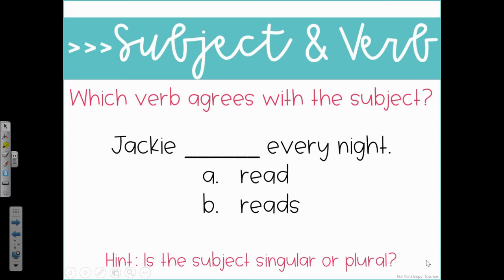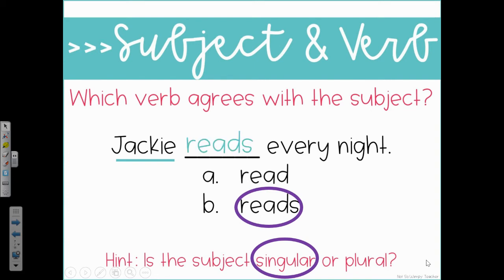Let's look at some examples. Which verb agrees with the subject? First, we need to see what our subject is. We have Jackie blank every night. Who is our sentence about? Our subject is Jackie. Is the subject singular or plural? Hopefully, you realize that our subject here is singular. So the general rule is if you have a singular subject, look for the S on your action verb. Jackie read every night or Jackie reads every night? Which one has that S? It is reads. Nice work.